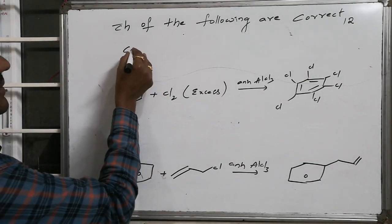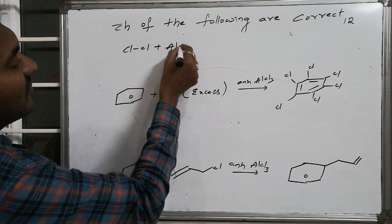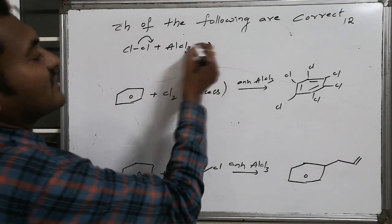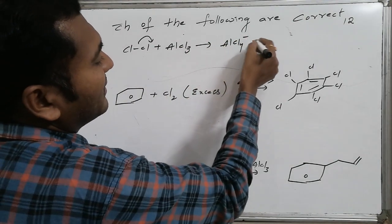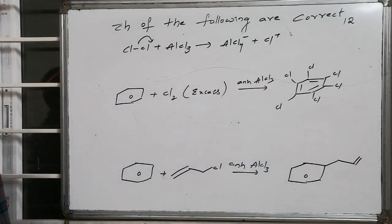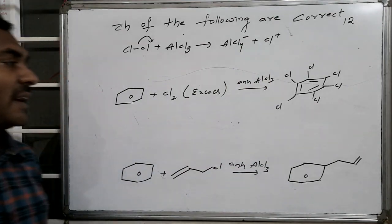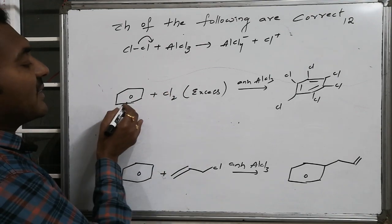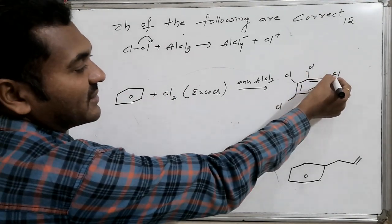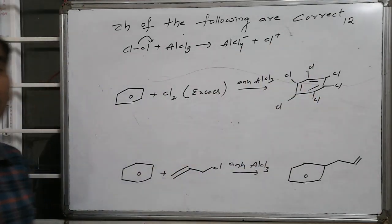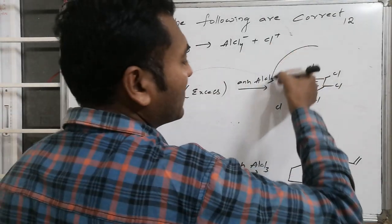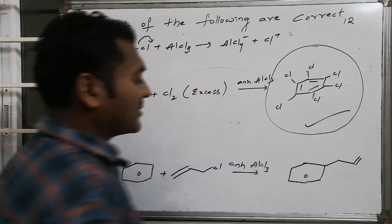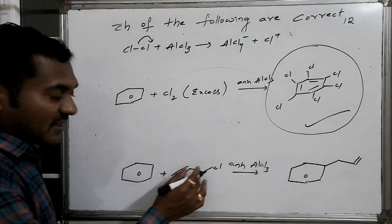For option 2, chlorine with anhydrous AlCl₃: one Cl–Cl bond is broken, Cl⁻ combines with AlCl₃ to form AlCl₄⁻, and Cl⁺ is generated. With excess chlorine, excess Cl⁺ is generated, making successive attacks on benzene. All six hydrogens are replaced, resulting in the formation of hexachlorobenzene. This reaction is correct.